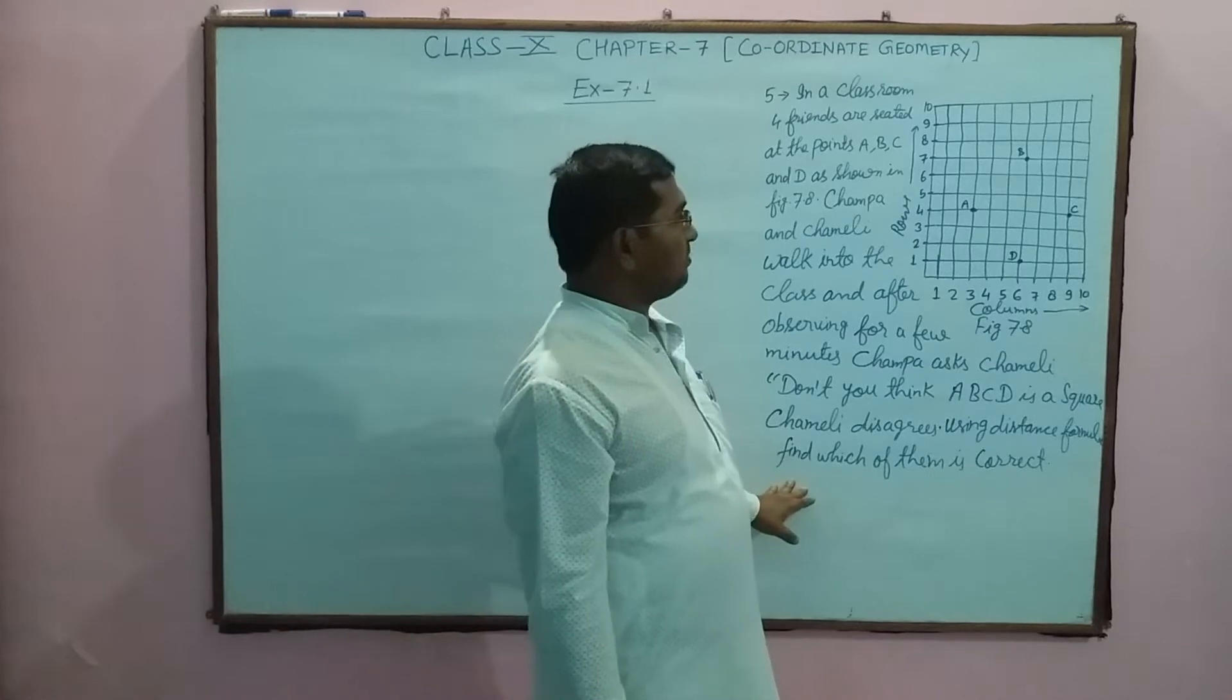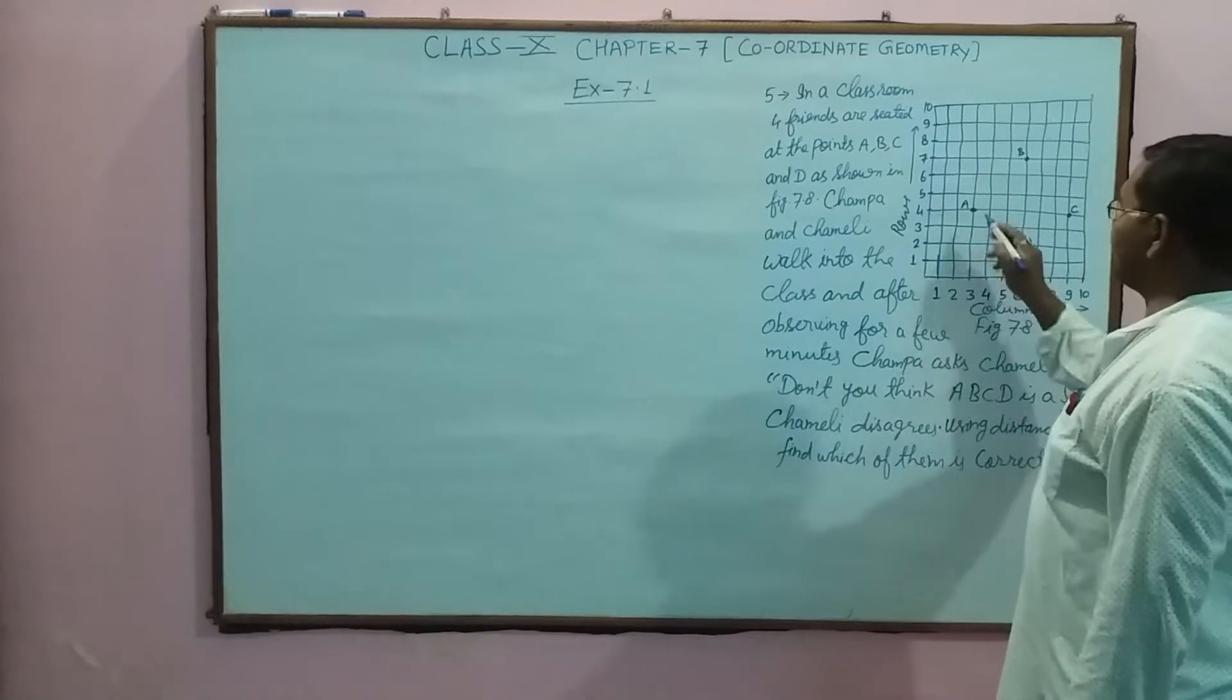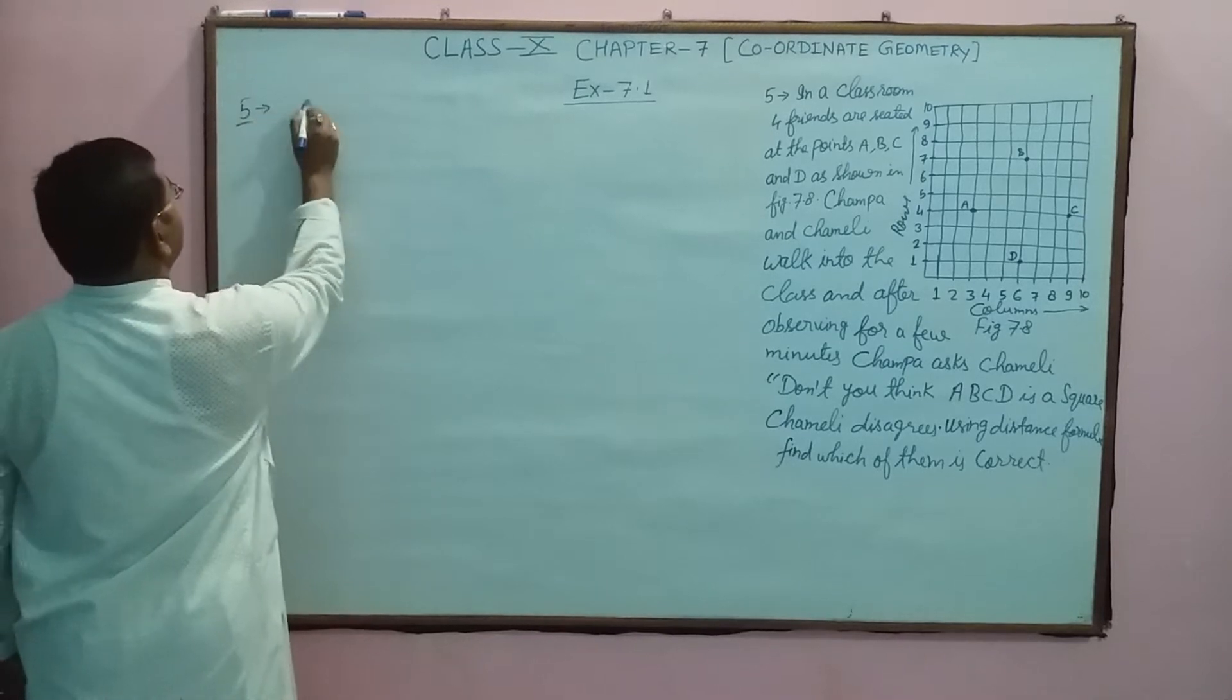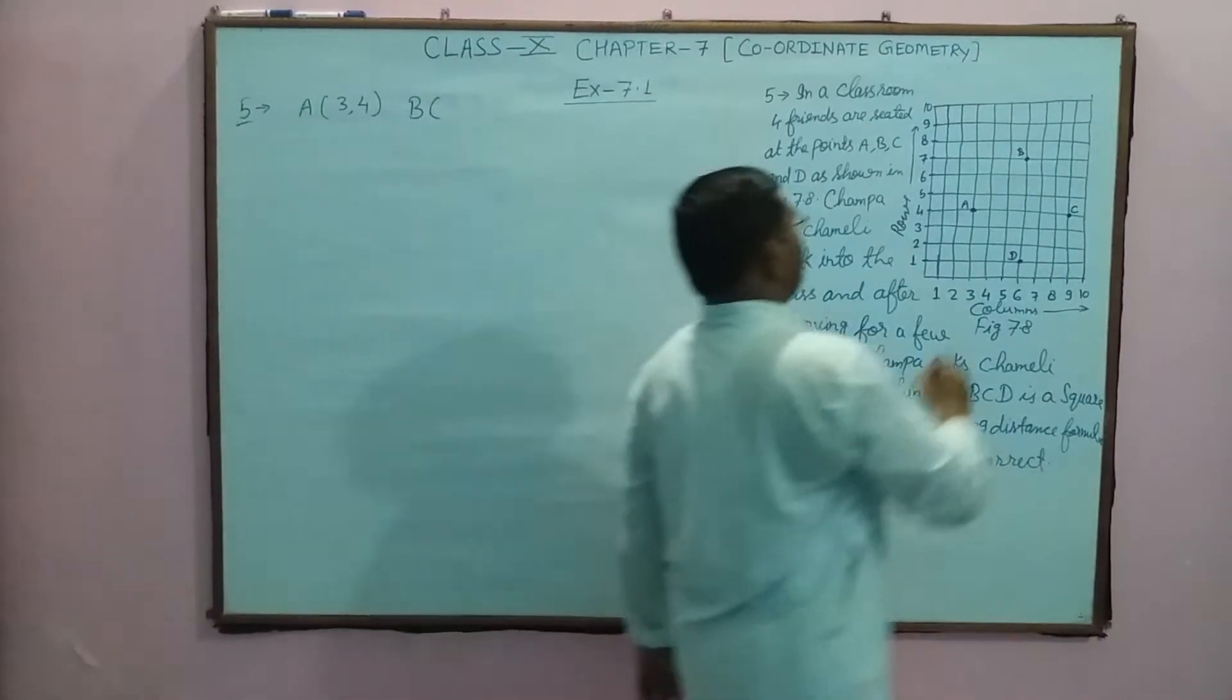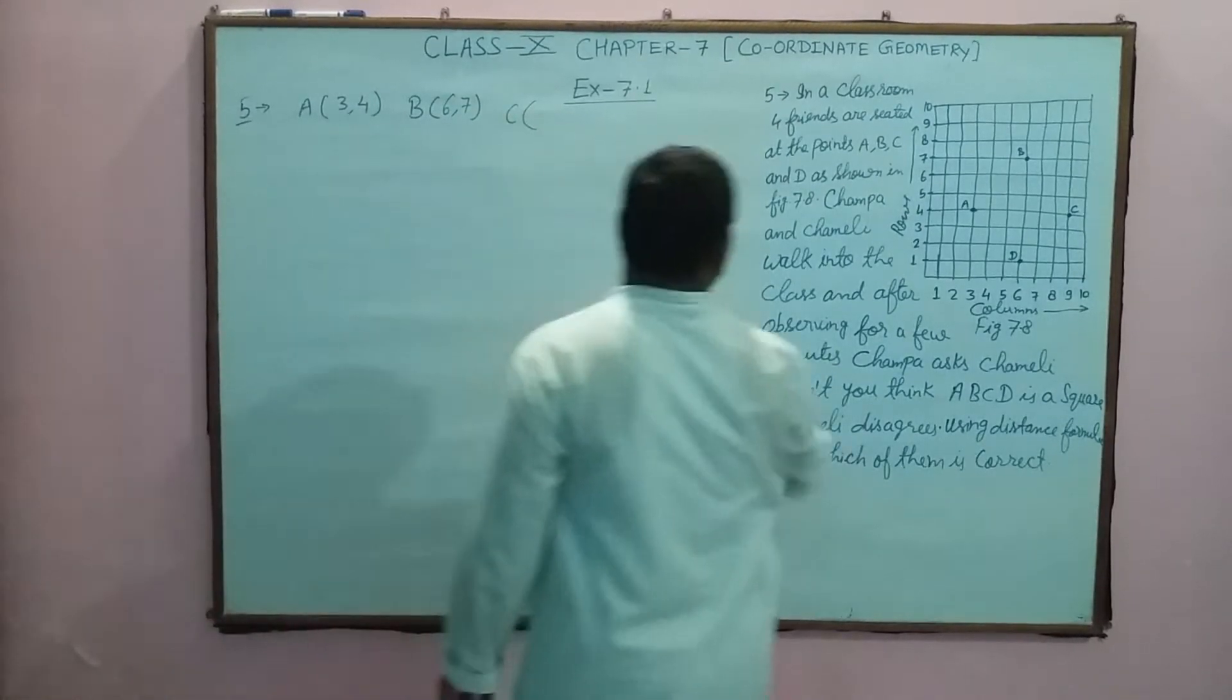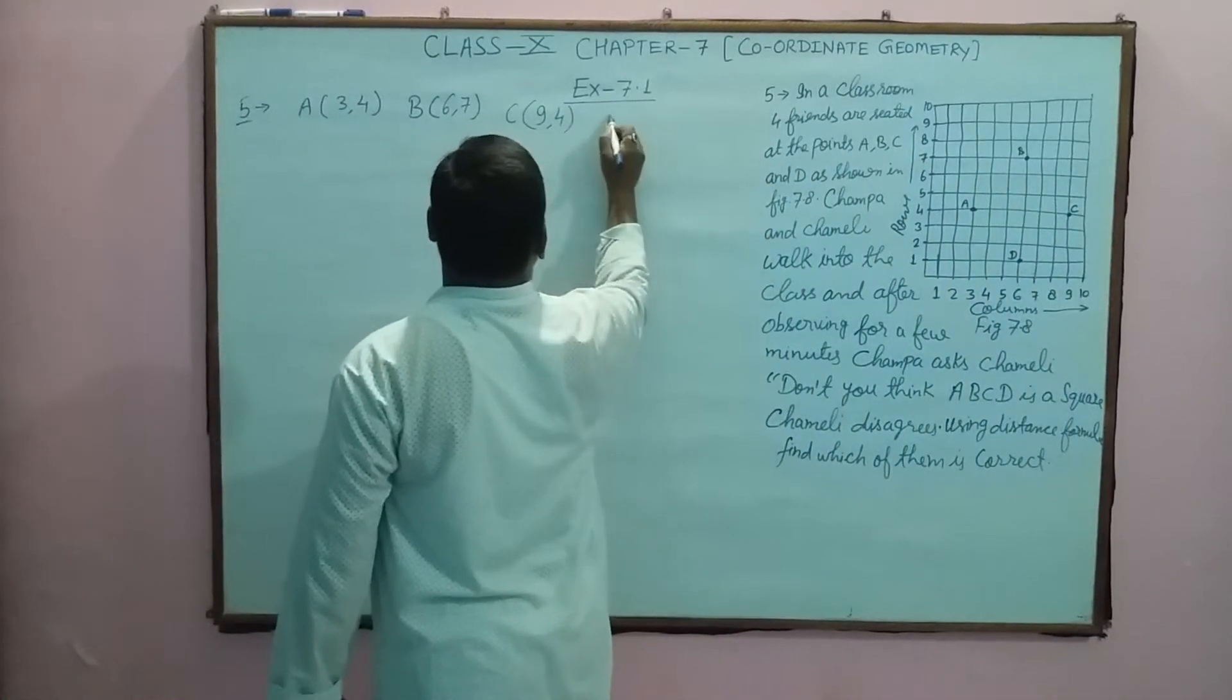So we have to plot these points. A is at (3,4), so on the X-axis 3 and Y-axis 4. B point is at 6,7, so it's (6,7).